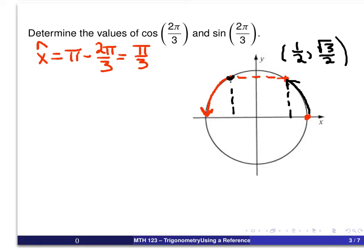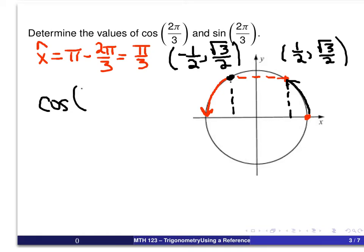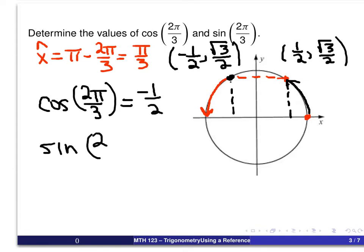In other words, for the point 2π/3, the coordinates will be (−1/2, √3/2). And once we determine those coordinates of the terminal point, we know the cosine and sine values: the cosine is the x-coordinate, the sine is the y-coordinate. So we get cosine of 2π/3 equals −1/2, and sine of 2π/3 equals √3/2.